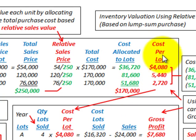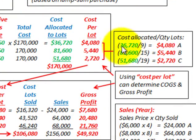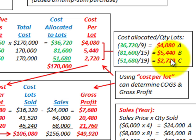Next, we calculate the cost per lot. For group A, we take the total allocated cost of $36,720 and divide by the quantity of 9 lots, giving us $4,080 per lot. We do the same for B and C — for example, group B has an allocated cost of $81,600 divided by its number of lots, giving $5,440 per lot.